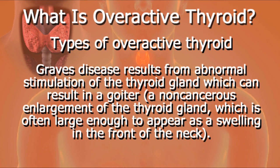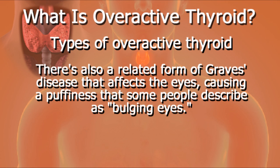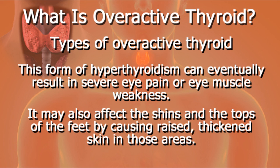There is also a related form of Graves' disease that affects the eyes, causing a puffiness that some people describe as bulging eyes. This form of hyperthyroidism can eventually result in severe eye pain or eye muscle weakness. It may also affect the shins and the tops of the feet by causing raised, thickened skin in those areas.